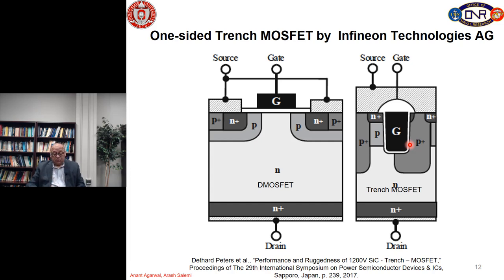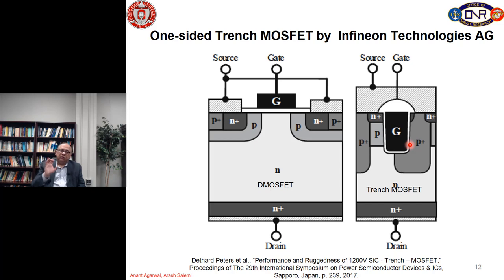This structure is also commercial, just like the double trench structure from ROHM. Both structures are good up to 1700 volt devices, very effective for 600 V, 900 V, and 1200 V, and less effective as we go to higher voltages. A reference is given which you can look up for more about these structures.